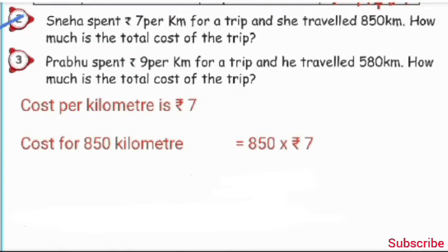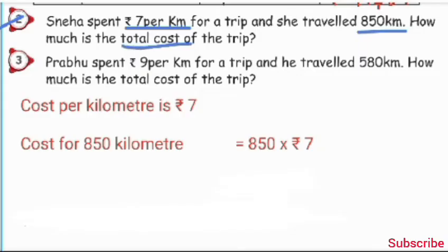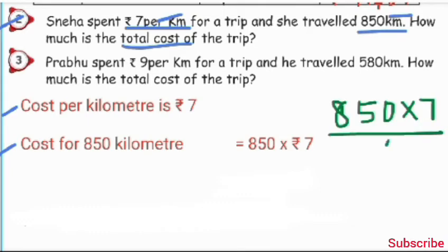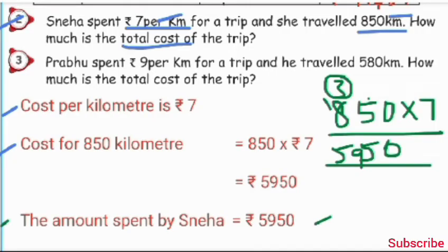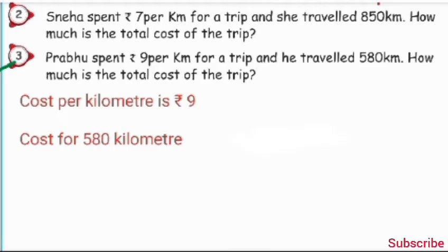Second sum: Sneha spent rupees 7 per km for a trip and she travelled 850 km. How much is the total cost of the trip? Sneha travelled 850 km and spent Rs. 7 per km. Cost per km is Rs. 7. Cost of 850 km is 850 multiply by 7: 7 times 0 is 0, 7 times 5 is 35, write 5, carry 3. 7 times 8 is 56, plus 3 is 59. The amount spent by Sneha is equal to 5,950.